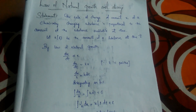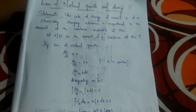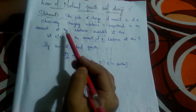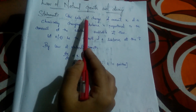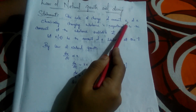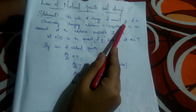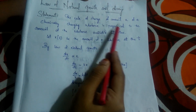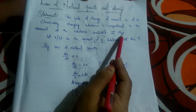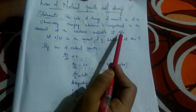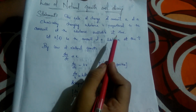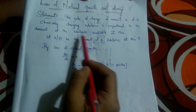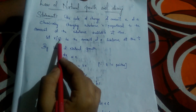Let's look at the law of natural growth and decay. The statement is: the rate of change of amount X of a chemically changing substance is proportional to the amount of the substance available at time t. The rate of change of amount X — that is, differentiation — so DX of a chemically changing substance is proportional to the amount of the substance available at time t.